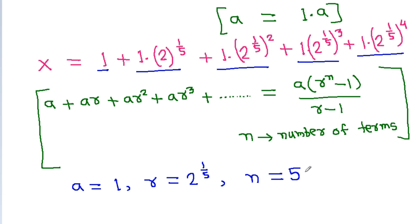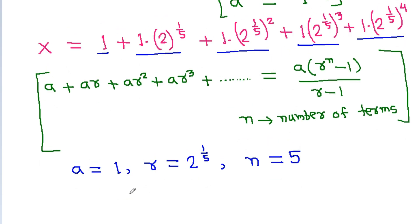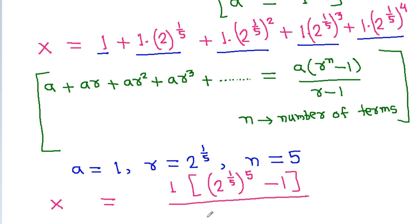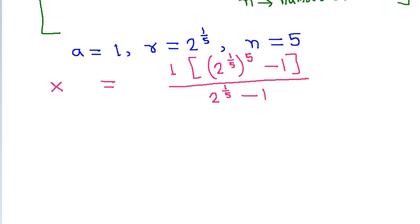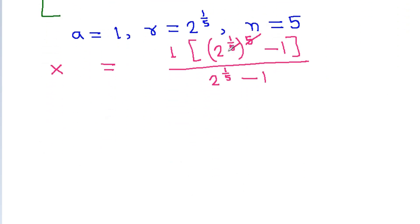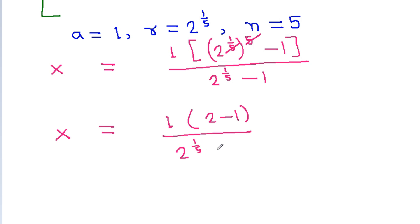So x will be equal to 1 times (2 power 1 by 5) power 5, minus 1, by (2 power 1 by 5 minus 1). The 5th power and 1 by 5 will get cancelled, so x is equal to (2 minus 1) by (2 power 1 by 5 minus 1), which gives x equal to 1 by (2 power 1 by 5 minus 1).